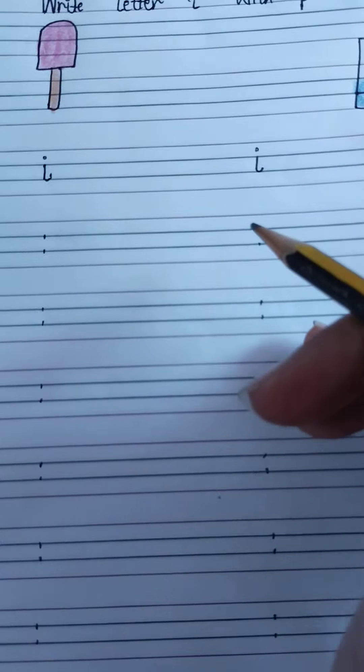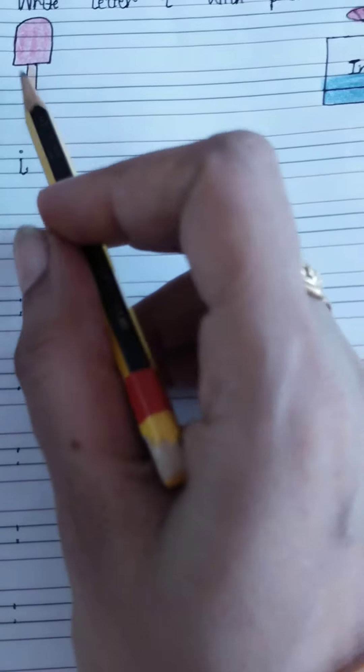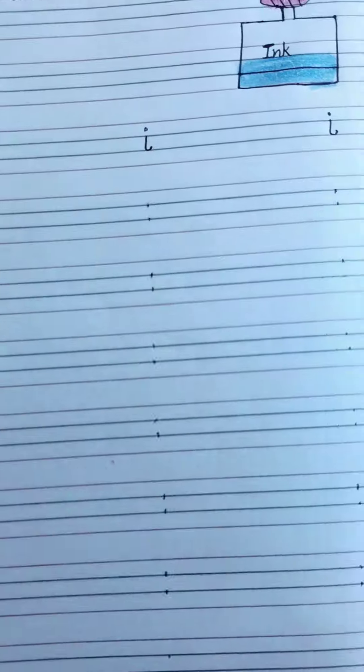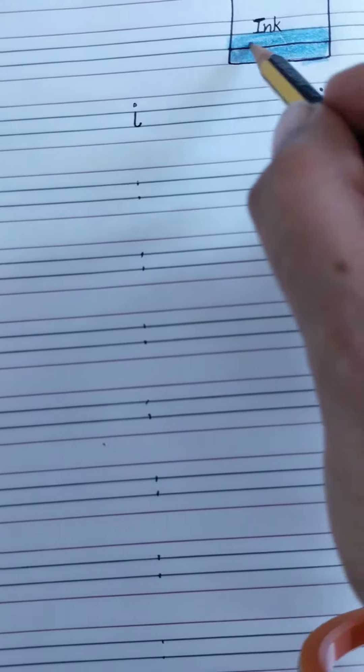Today we will learn how to write 'I'. 'I' for ice cream, 'I' for ink pot, 'I' for ink. You can see it is blue ink. Now see here.